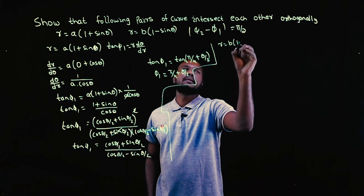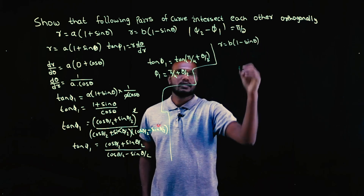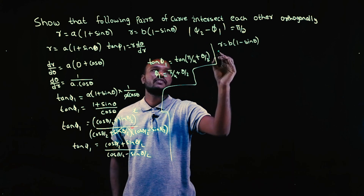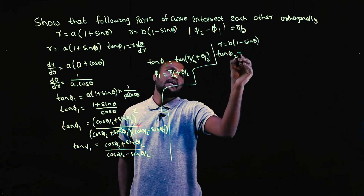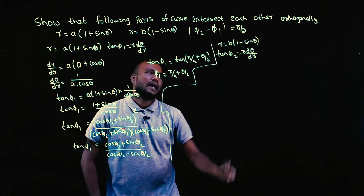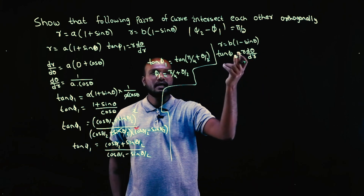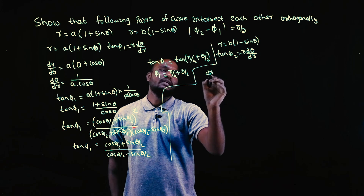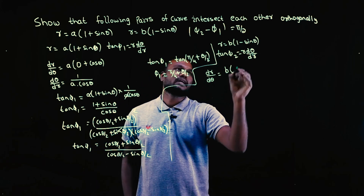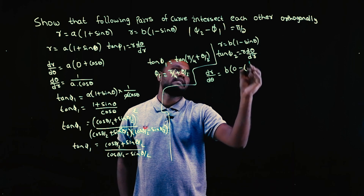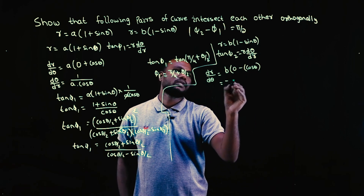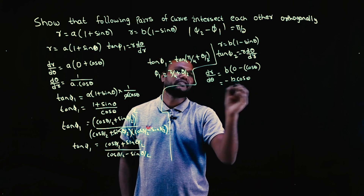Let's go to the second curve. R is equal to b(1 − sinθ). We want φ₂. To find φ₂ we need tan φ₂, which is R into dθ/dR. R is given. To find dθ/dR, we differentiate: dR/dθ equals −b cosθ, since 1 differentiates to 0 and −sinθ differentiates to −cosθ. So dθ/dR, the reciprocal, is −1/(b cosθ).